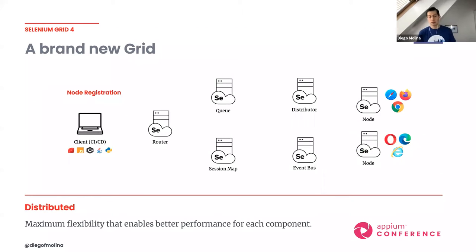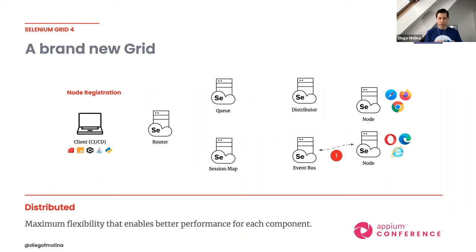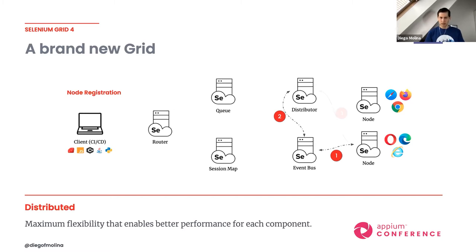Let's talk about node registration. Normally, a node sends a message to the event bus — the dotted line represents a message sent to the bus. The node announces: 'I am a node and I have these browsers ready.' The distributor listens to this registration message, then makes an HTTP call to double-check that the node actually exists. If confirmed, it registers the node.